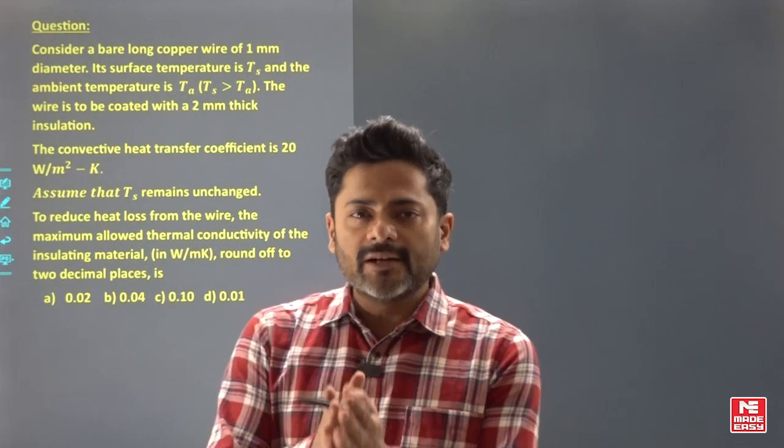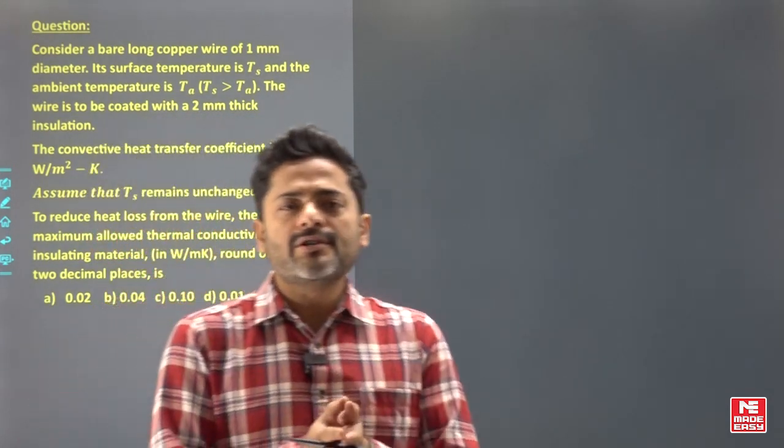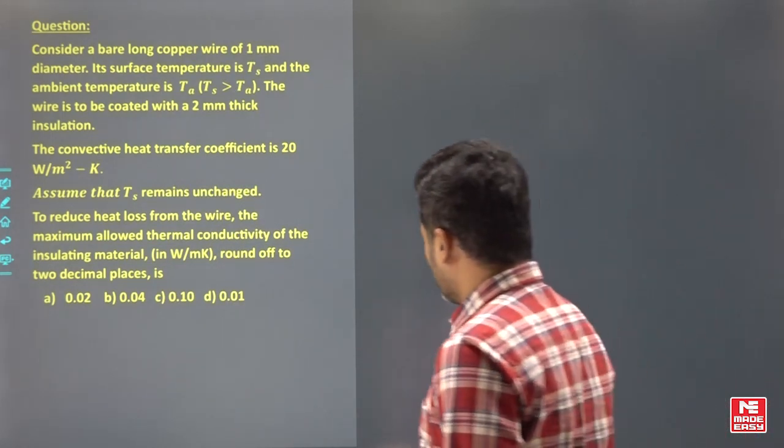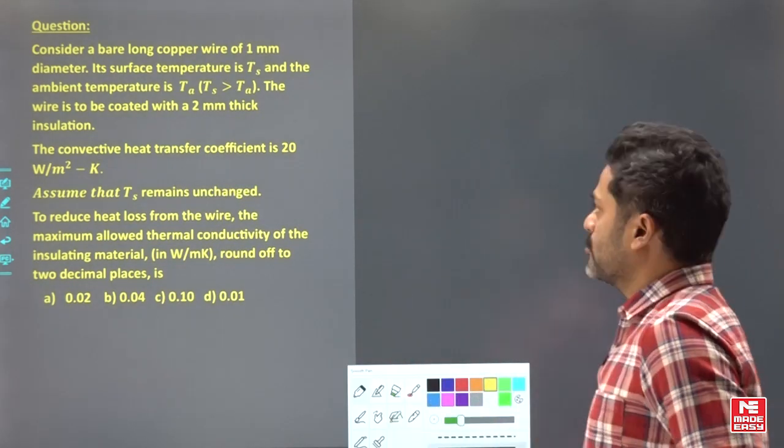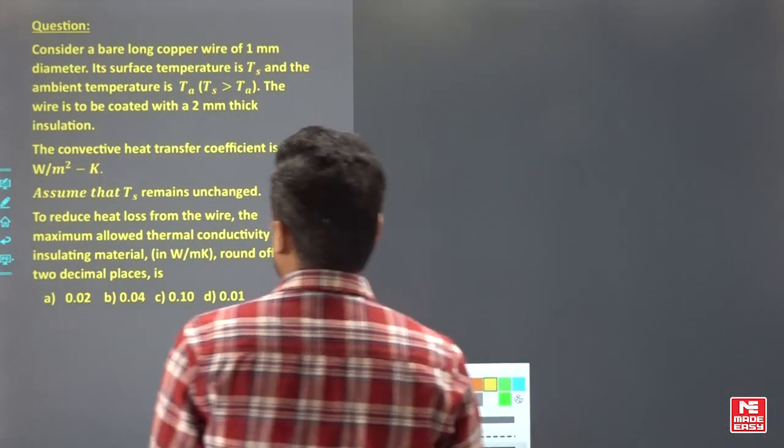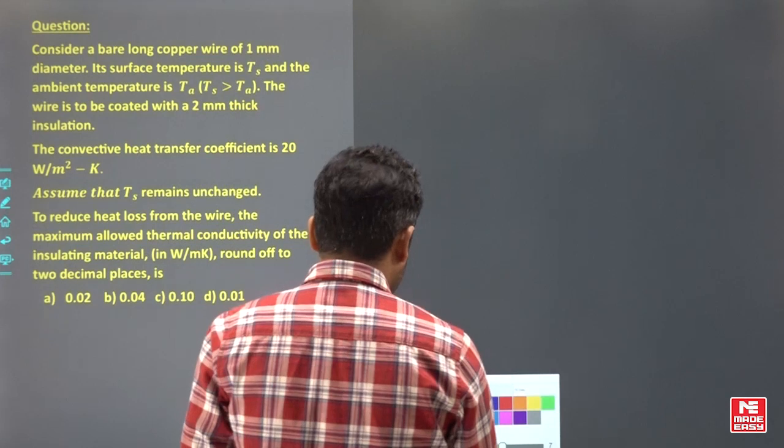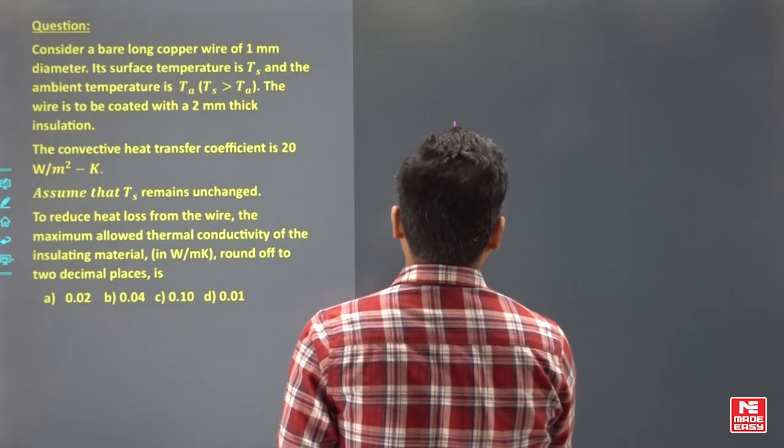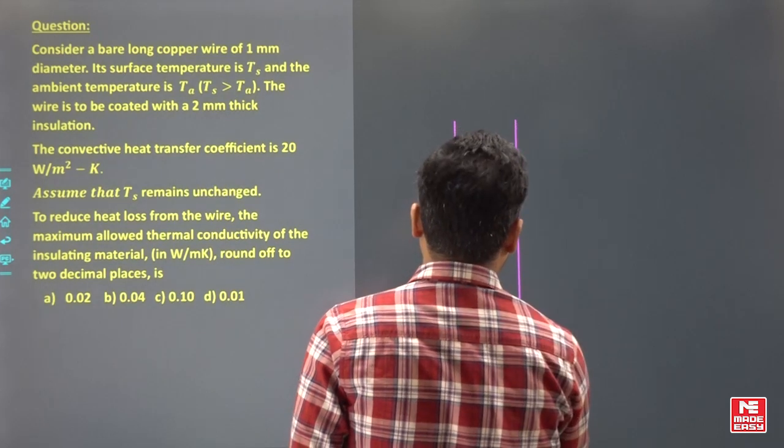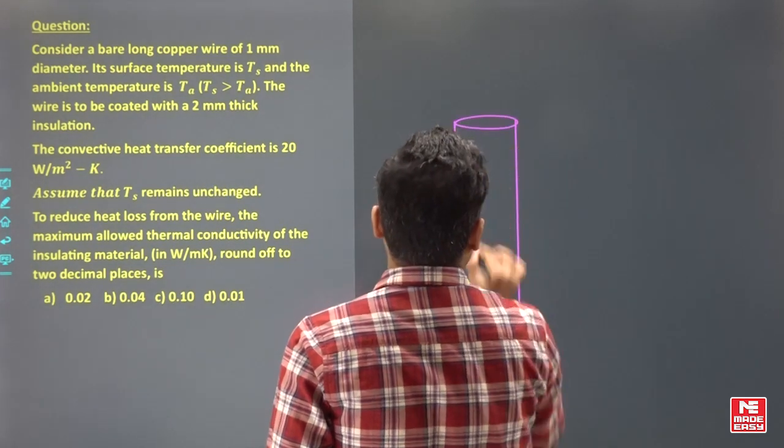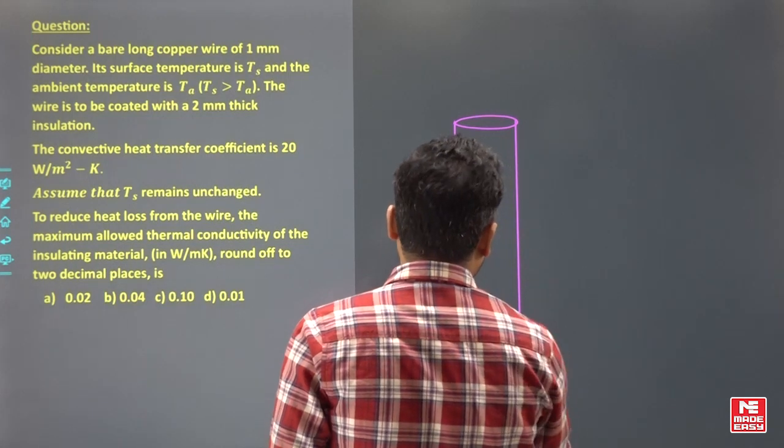Hello dear students, let's see some of the important previous year questions. I have taken a question from conduction. In this question, consider a bare long copper wire of 1 mm diameter. So there is a copper wire something like this, its diameter is given.